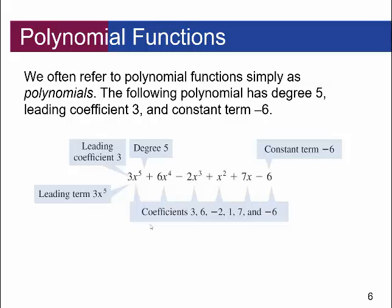For a quick example: suppose you have the polynomial 3x to the 5th plus 6x to the 4th minus 2x cubed plus x squared plus 7x minus 6. This is a degree 5 polynomial. All the numbers in front of the variables, including the constant term, are called coefficients. The leading term — the one with the highest exponent — is 3x to the 5th. The leading coefficient is 3, and the constant term is negative 6.